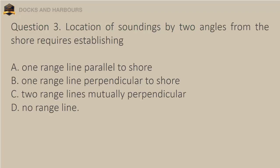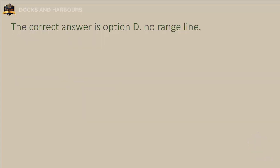Question 3. Location of soundings by two angles from the shore requires establishing: A. One range line parallel to shore. B. One range line perpendicular to shore. C. Two range lines mutually perpendicular. D. No range line. The correct answer is Option D: No range line.